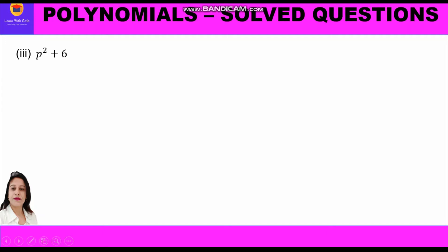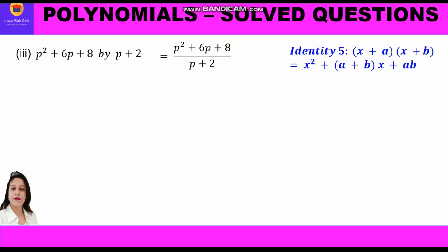Now the third part: divide p squared plus 6p plus 8 by p plus 2. We write in fraction form: (p² + 6p + 8) upon (p + 2). We factorize the numerator using identity 5. We have to think of two numbers a and b such that their sum is 6 and their product is 8. We know that 4 plus 2 is 6 and 4 times 2 is 8.